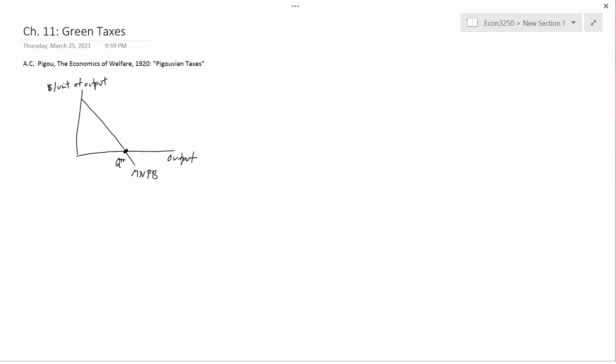But now suppose that the government imposes a tax on this output. And we're going to suppose that the tax schedule with this vertical axis, dollars per unit of output, is horizontal. What that means is that it's a tax like five percent.